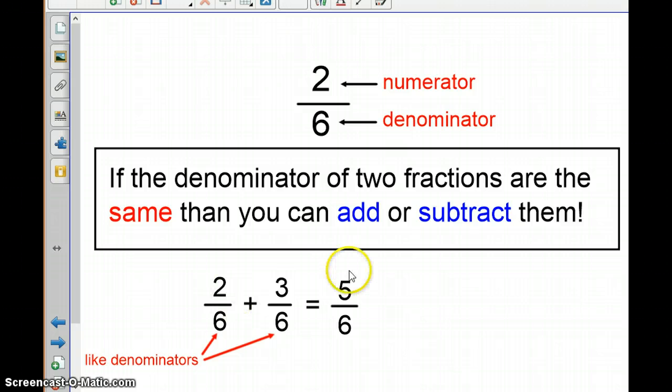Are they the same? So with this example problem right here, we have 2 sixths plus 3 sixths. So as a mathematician, the first thing I'm going to look at is the denominators. Are they the same? Okay, in this case, they are.